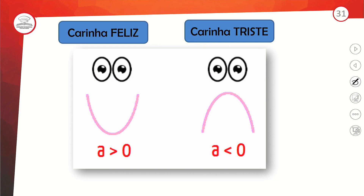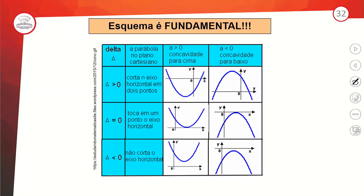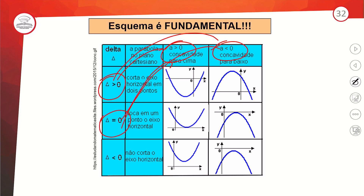É interessante comparar o delta com o valor de A. O A determina a concavidade — para cima ou para baixo — e o delta fala sobre as raízes. Se A maior que zero e delta maior que zero: parábola para cima tocando o eixo X duas vezes. Se A positivo e delta zero: toca o eixo X uma só vez, parábola aberta para cima. Aqui temos os seis formatos de gráficos associando os valores de delta e A.